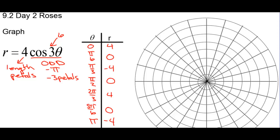Let's plot the points. We have 0, 4. Then at pi over 6, we're at 0, so when we're at an angle of pi over 6 we're at the origin again — or at the pole — so it'll loop around like that. Then at pi over 3, we're at negative 4. Pi over 3 is going the opposite direction, so it loops around to here. At pi over 2, we're at 0. 2 pi over 3 is 4, so that loops around to here. At 5 pi over 6, we're back to 0. And then we finish up with pi being negative 4.